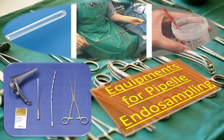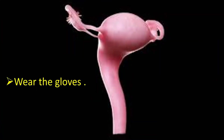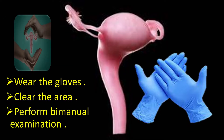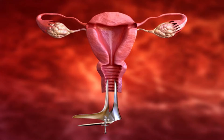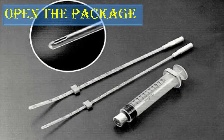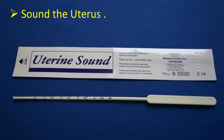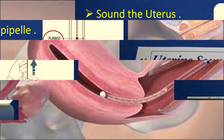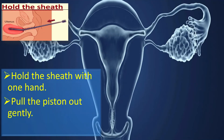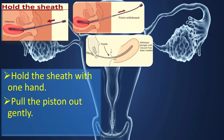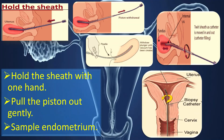After wearing gloves, I will clean the area and perform a bimanual examination to assess the size, position, and mobility of the uterus. I will introduce the Cusco speculum of appropriate size after lubricating it and fix it to visualize the cervix. I will ask my assistant to open the package, sound the uterus, and fix the flange of the pipel according to uterine size. I will introduce the pipel up to the mark with the piston at its extreme distal end, then hold the sheath with one hand and pull the piston out gently and smoothly to its maximum to create negative pressure. I will sample the endometrium with to-and-fro rotating movements to sample all walls.